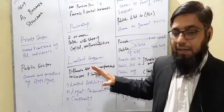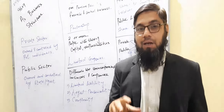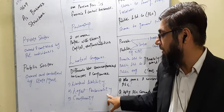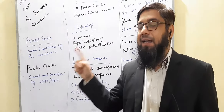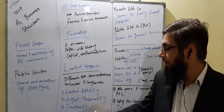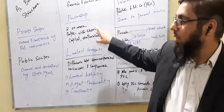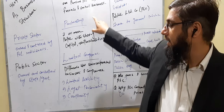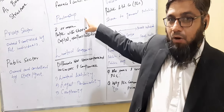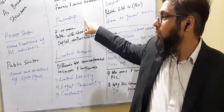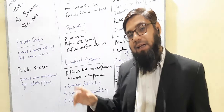The second difference is legal personality. Unincorporated businesses have no legal personality because they are not registered. Companies must be registered with the registrar office, so they have legal personality — meaning the company can sue others and others can sue the company. The third difference is continuity: if a sole trader or partner dies, the unincorporated business dissolves. But in a company, if any shareholder dies, the company continues.